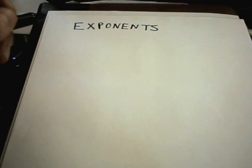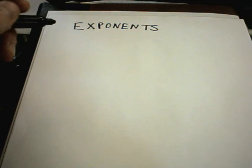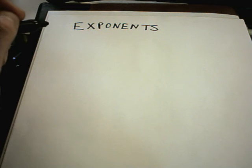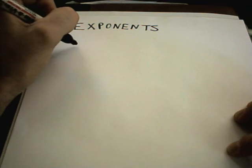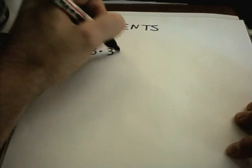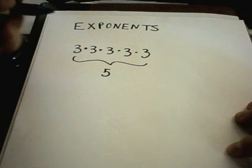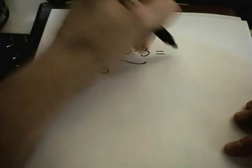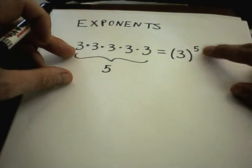In this video we're going to talk about basic properties of exponents, where the exponents are just positive whole numbers. Exponents can also be negative numbers, fractions, or decimals — basically just about anything — but we'll start with the basic case. An exponent is really just a shorthand way of writing something. Suppose I have 3 times 3 times 3 times 3 times 3 — I have five threes — so we write this compactly as 3 raised to the fifth power.